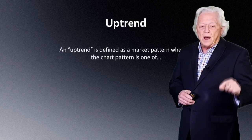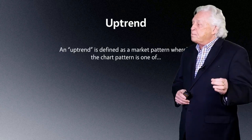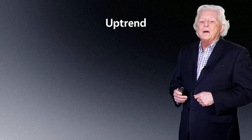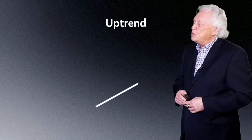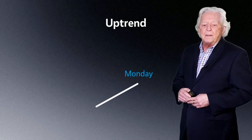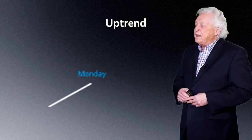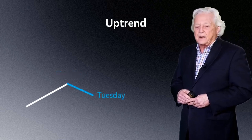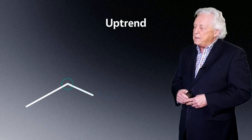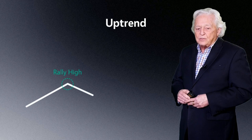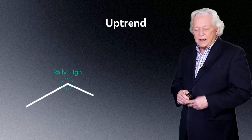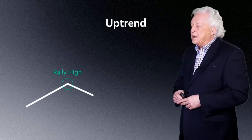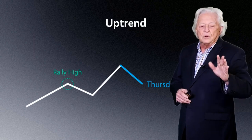An uptrend, as I define it, is a market pattern whereby the chart pattern is one of higher highs and higher lows. But how do you see that on a chart? Let's assume we get a line coming up — we'll call that Monday, so we had an up day on Monday. Then the market slips back and on Tuesday we get the market coming down. What we have right here is an apex, and that apex is going to be what I call the rally high. I'm using Monday and Tuesday but it could be a five-minute bar chart or 15 — it doesn't matter. The concept is the market goes up, then falls back.